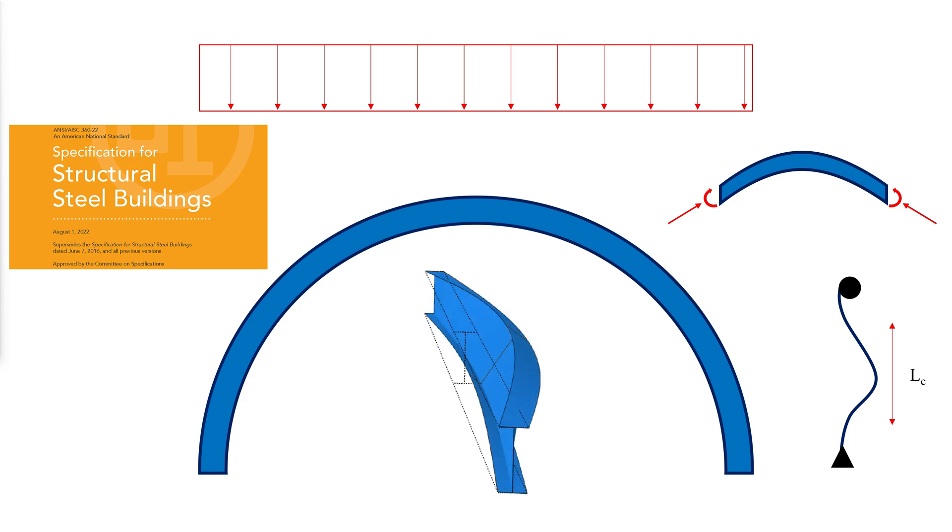A funicular shape is the geometry resulting exclusively in axial loads in a member when subjected to a particular load system. The funicular tension member shown takes the shape of a weightless cable under load.